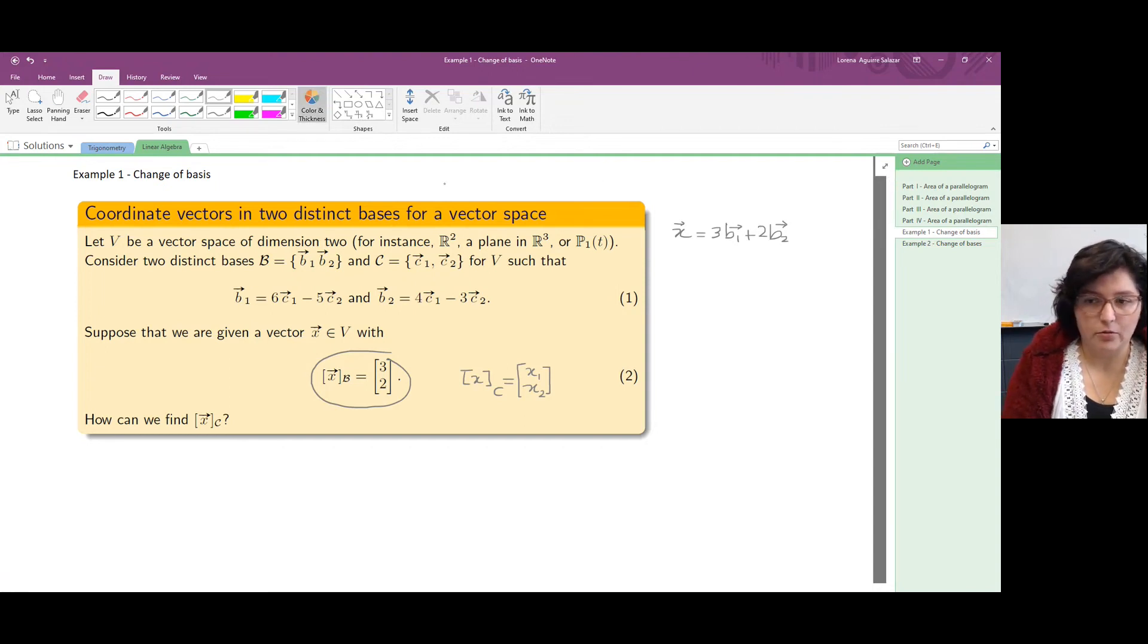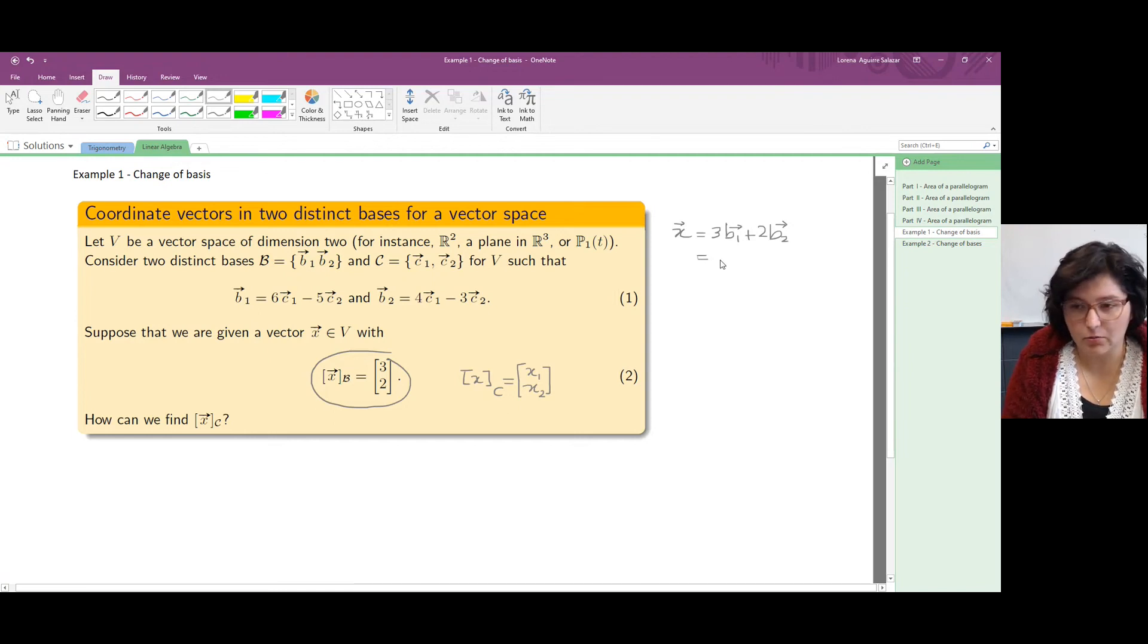We can try to look at what B1 is in terms of C1 and C2, the same with B2. That way we will get X as a linear combination of C1 and C2, and that way we will get to see those weights we need to use.